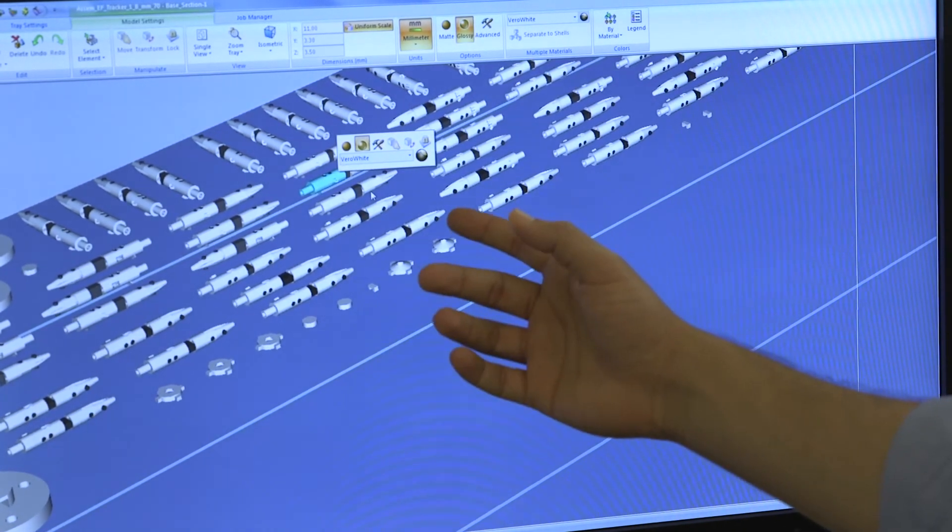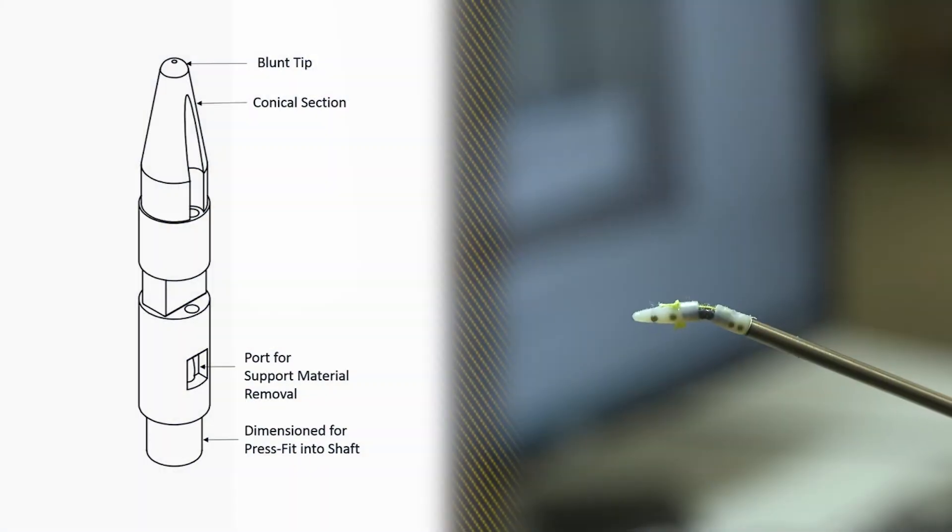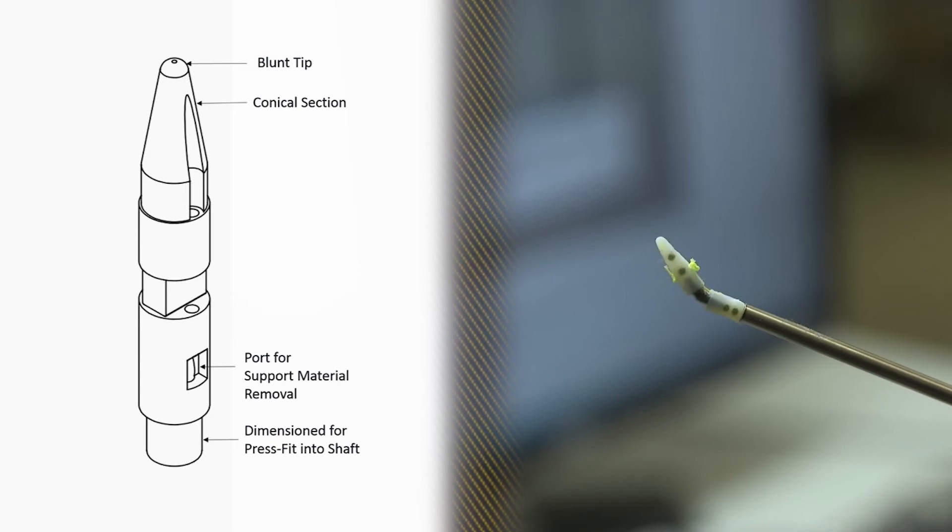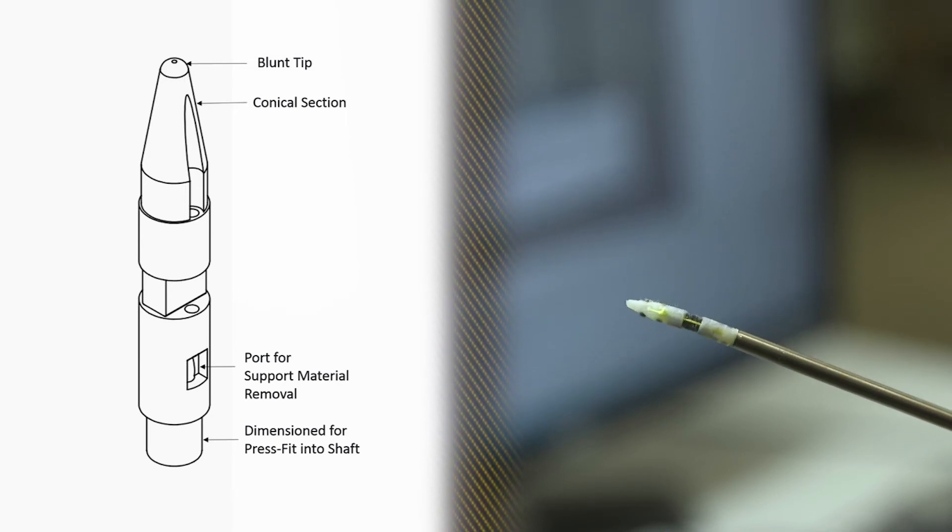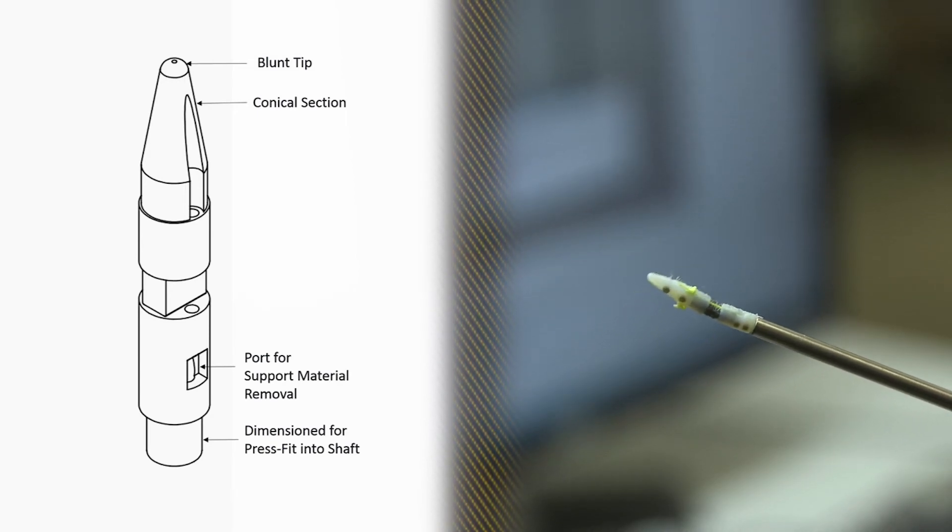Currently, we have prototype 2 surgical instruments. We have a nerve retractor tool, which is an articulated instrument which has a blunt tip and is used to move the nerve out of the way during the procedure.